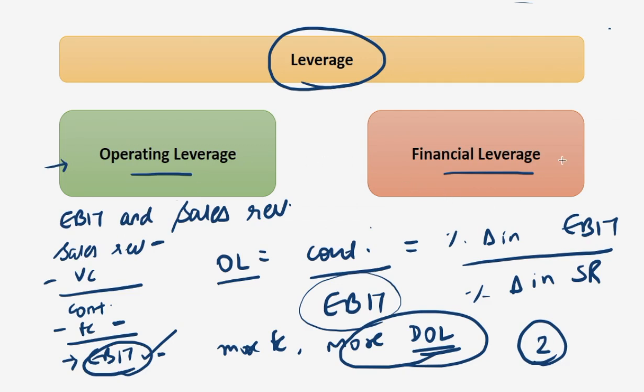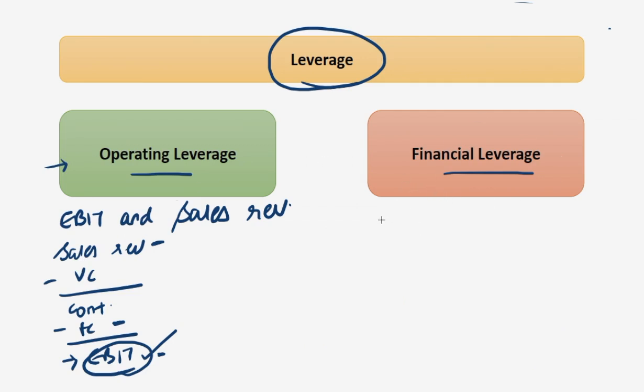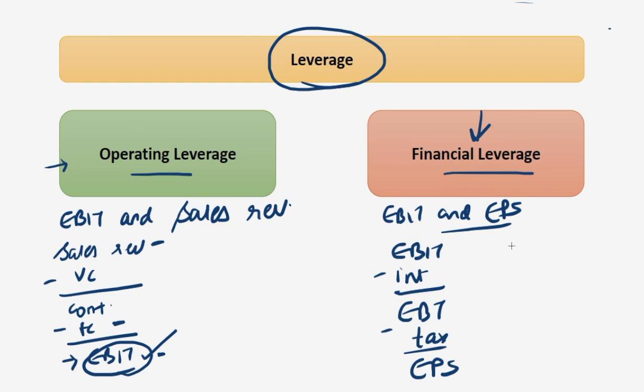A firm should try to operate at a level sufficiently higher than the break-even level so that chances of loss due to fluctuation in sales are minimized. Now we shall move to financial leverage. Financial leverage is a relationship between EBIT and EPS. There is EBIT, you subtract your interest, you get EBT. From here you deduct your tax and you get EPS. Financial leverage is calculated as EBIT upon EBIT minus interest, or we can say EBT.